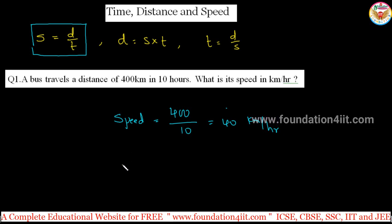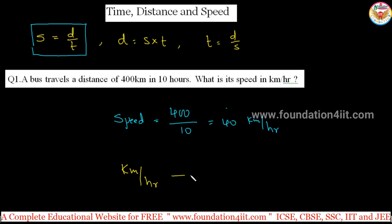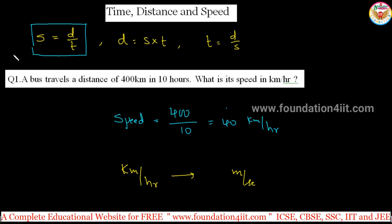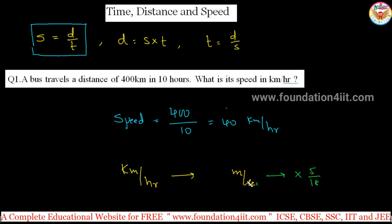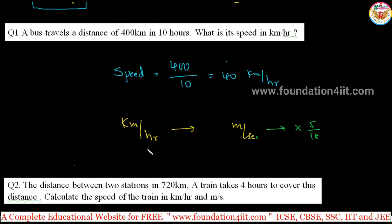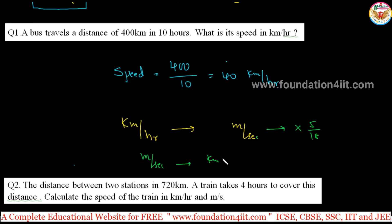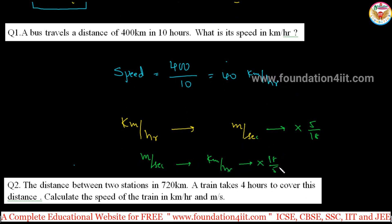One more thing: to convert kilometers per hour to meters per second, we have a simple basic formula. Just multiply the answer by 5/18 and it will convert into meters per second. In reverse, to convert meters per second into kilometers per hour, multiply by 18/5.